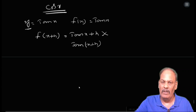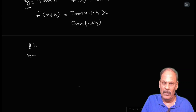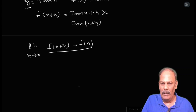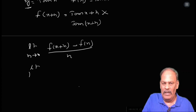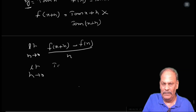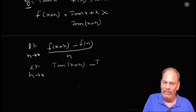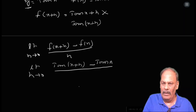Applying the first principles formula: limit h tends to 0 of [f(x+h) minus f(x)] by h becomes limit h tends to 0 of [tan(x+h) minus tan x] whole by h.